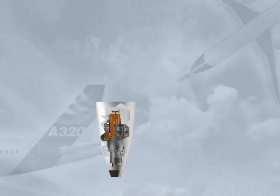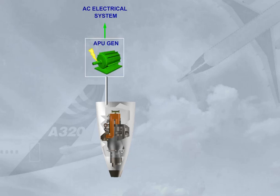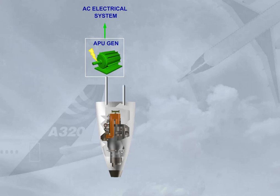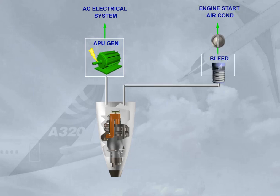The APU provides AC electrical power for the aircraft electrical system and bleed air for engine start and/or air conditioning.